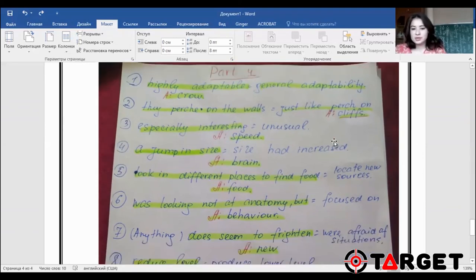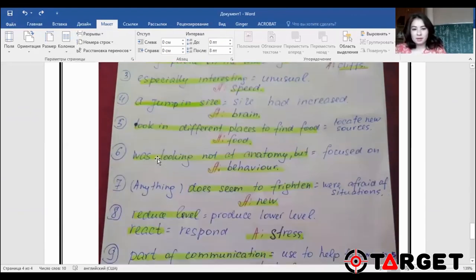Number three, especially interesting would be unusual, unusual or especially interesting speed. The answer was speed. And next, number four, a jump in size and the synonym size had increased. Size of what had increased? Size of brain. Brain of birds had increased or jumped in size. They are paraphrased.